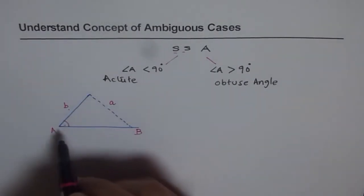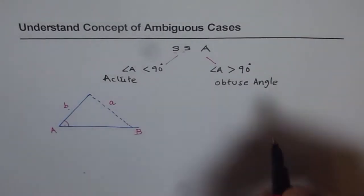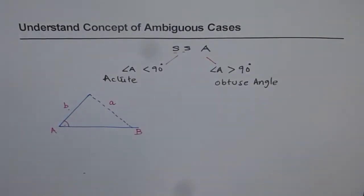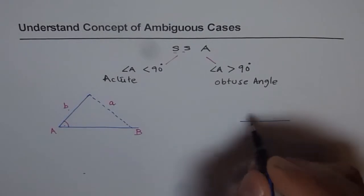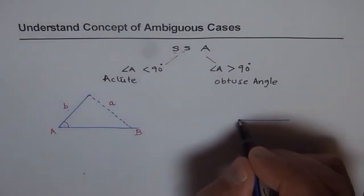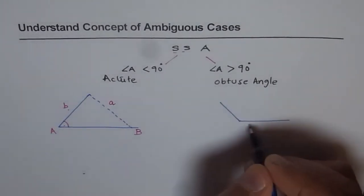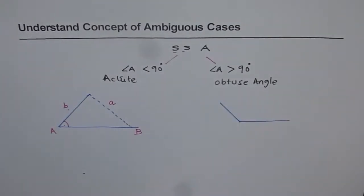In the first scenario we are considering, angle A is acute. In case it is obtuse, your triangle will look something like this — it becomes an obtuse angle.